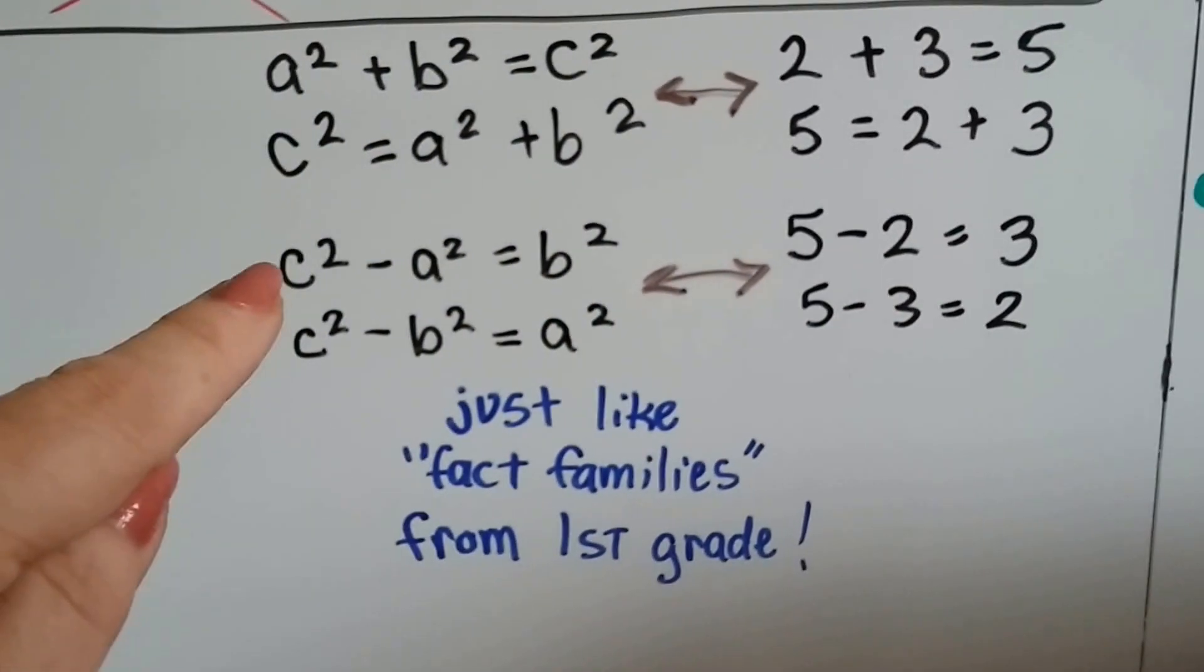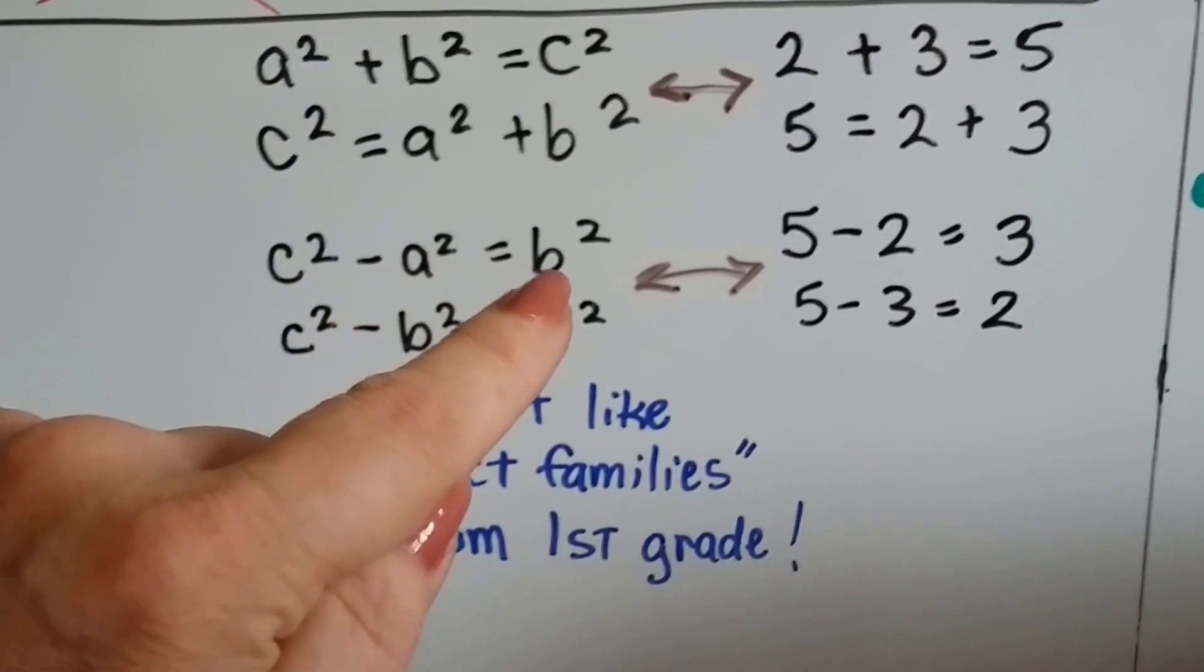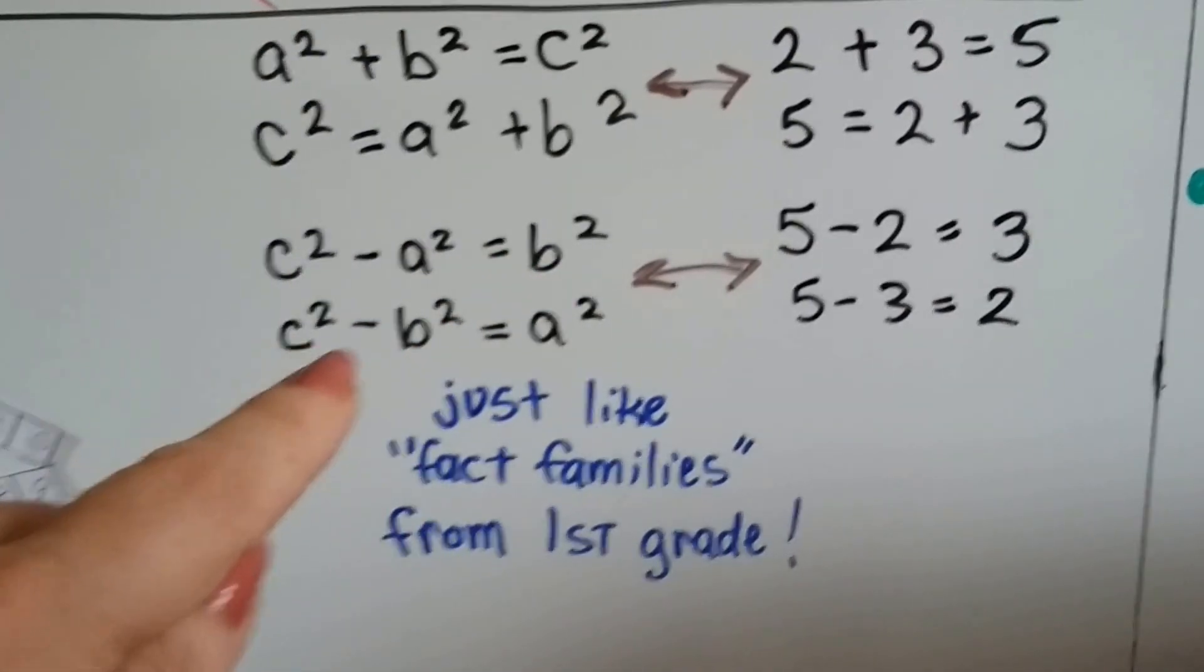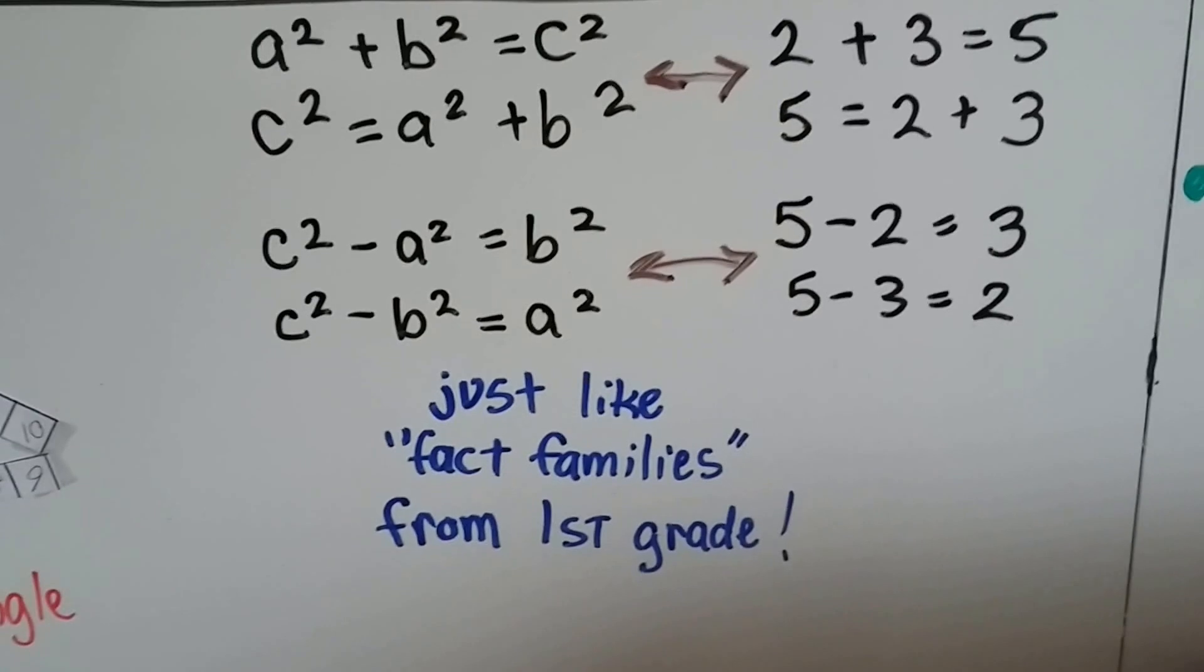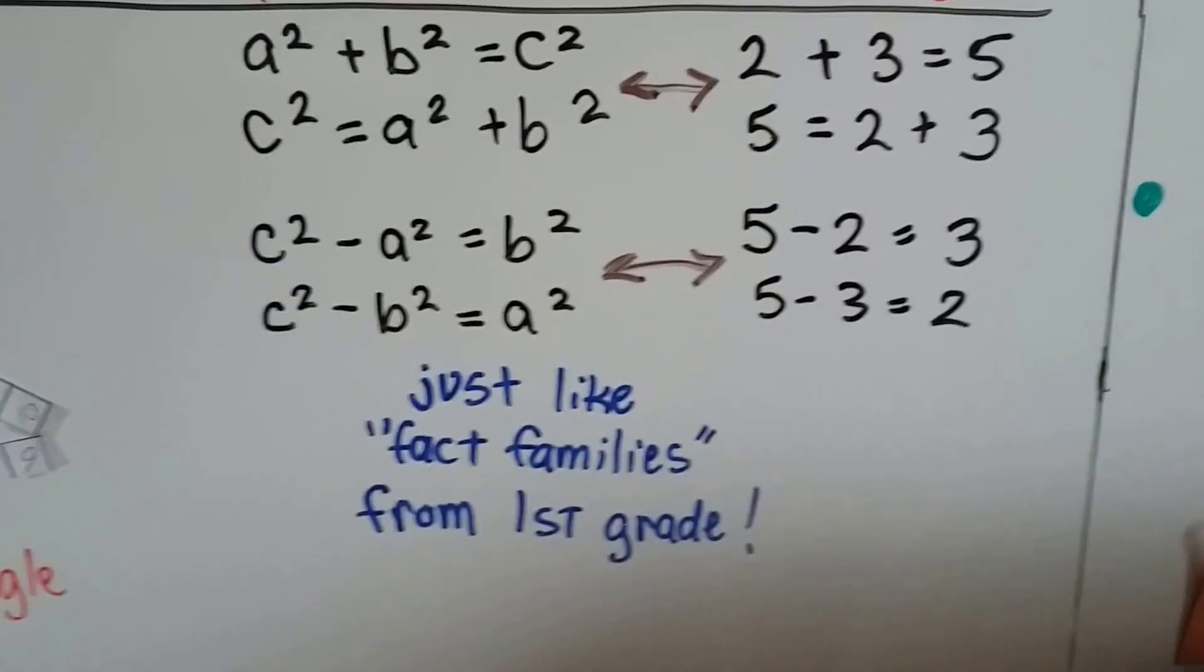Same thing. If we have c squared and take away a squared, it's going to give us b squared. And if we have c squared and take away b squared, it's going to be a squared. See that? Same thing as first grade.